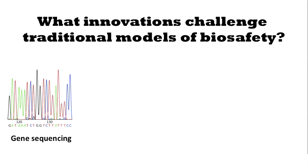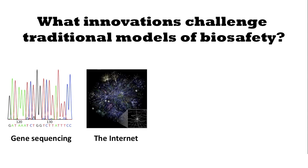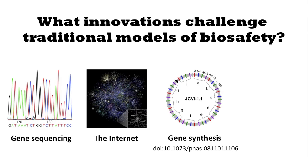Gene sequencing is becoming less expensive and faster, meaning that there's a tremendous and increasing amount of genetic information. This genetic information is disseminated on the internet, meaning it's available both to researchers and the public. Gene synthesis technologies are also becoming faster and less expensive, and capable of producing larger and larger segments of genetic material, so information can more easily become actual genetic material.